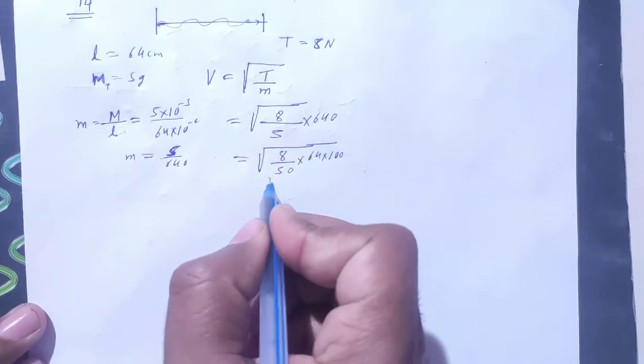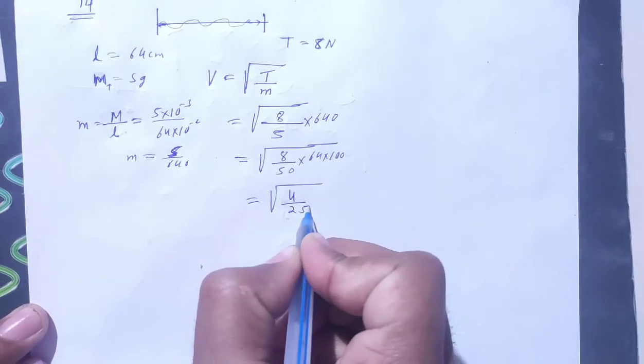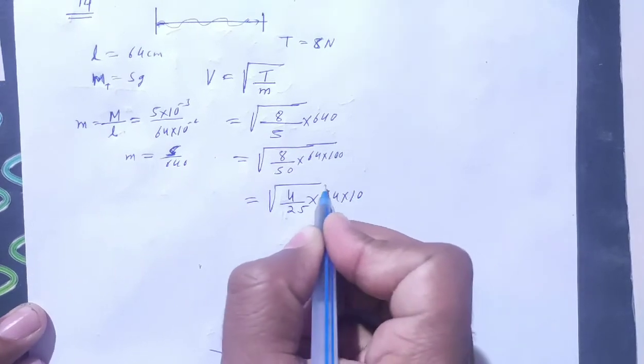Here we will cut from 8 to 2. This is 4, this is 25, this is 64 and this is 10. This is perfect square.